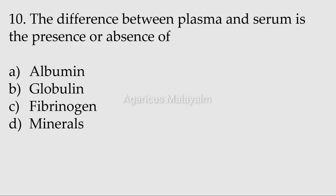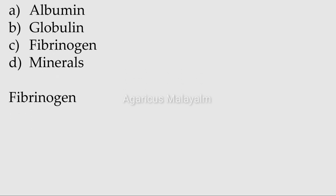Tenth question: the difference between plasma and serum is the presence or absence of? Answer options: option A, albumin; option B, globulin; option C, fibrinogen; option D, minerals. Correct answer: option C, fibrinogen. Serum is fluid in nature; plasma is liquid in nature. Plasma has fibrinogen present.